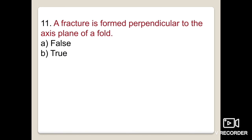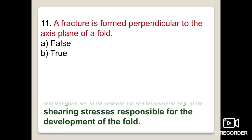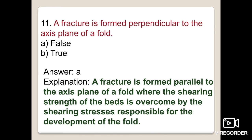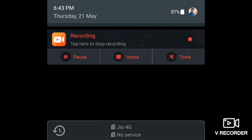The eleventh question: a fracture is formed perpendicular to the axis plane of a fold — true or false? This is false. A fracture is formed parallel to the axis plane of a fold, where the shearing strength of the bed is overcome by shearing stresses responsible for the development of the fold. This concludes our discussion on the recognition of faulting and fault evidences. Please revise these topics as they are important for exams.